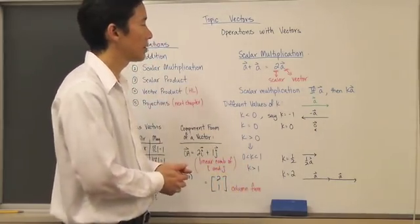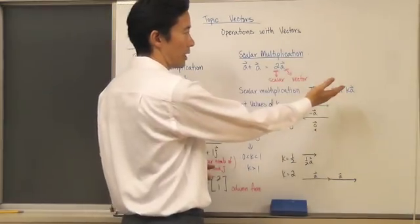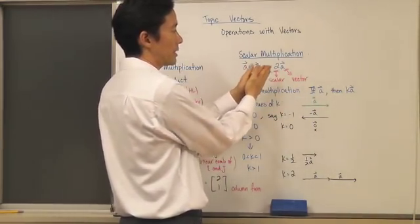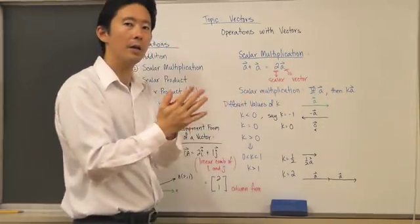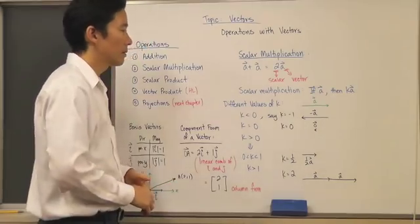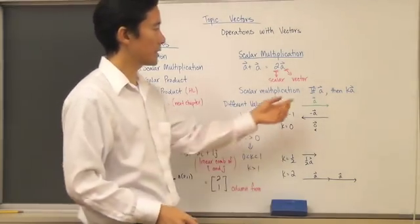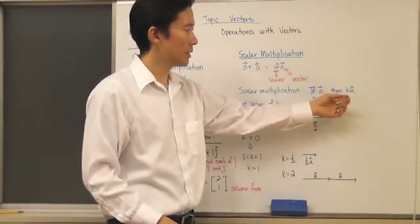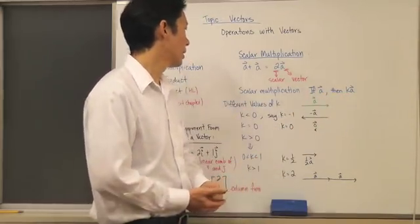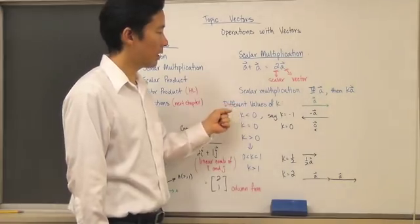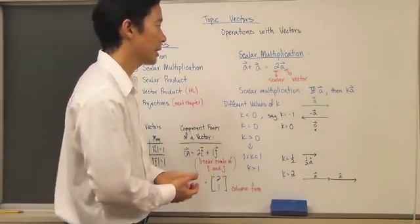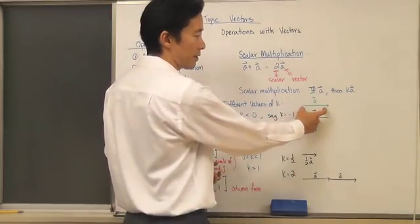With scalar multiplication, we're simply multiplying a scalar to a vector, and the result is again a vector. If scalar multiplication is just some scalar k multiplied to a given vector a, we need to investigate what happens for different values of k. Let's say this is what our original vector a looks like.